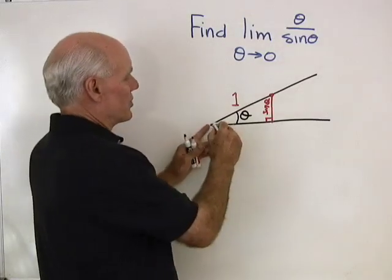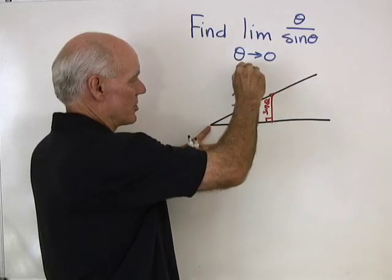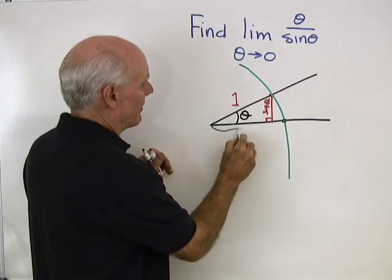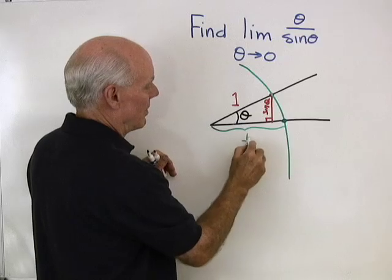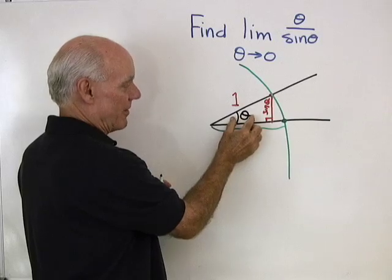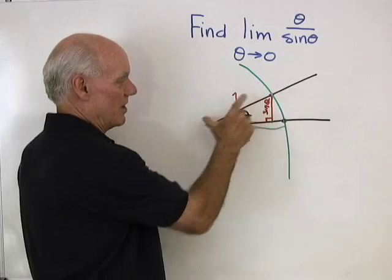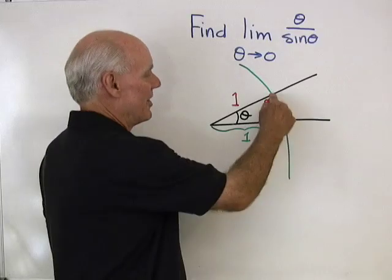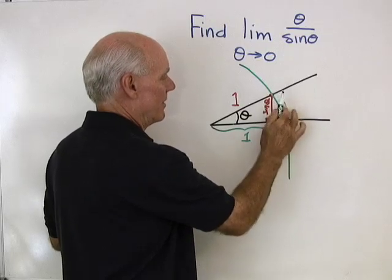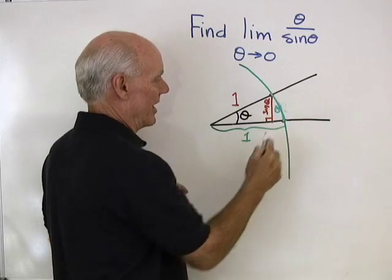Now, there's a circle with a radius of one centered at the vertex. I'm going to draw that circle in and see where it crosses the terminal side. That length is also one, since it's a radius. The radian measure of theta is the arc length over the radius — S over R. That means the length of that arc must be theta.